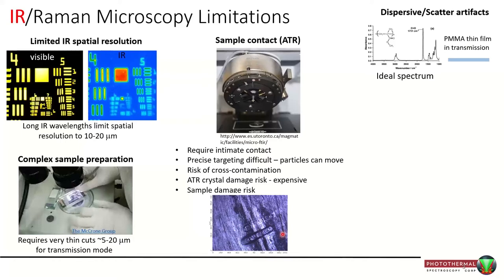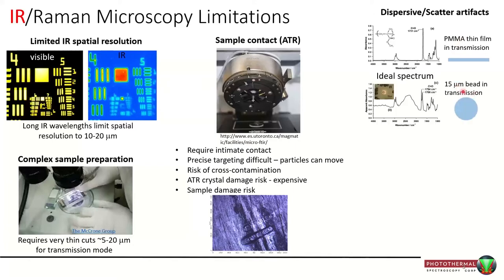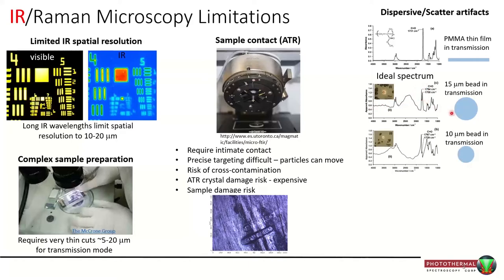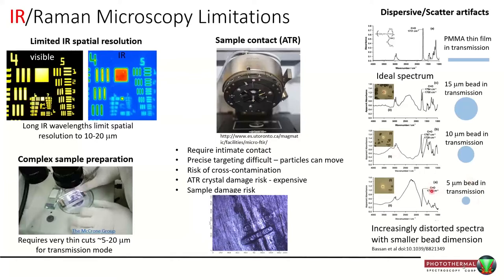Perhaps one of the biggest and lesser-understood issues are what we call dispersive scatter artifacts. Starting with an ideal thin film measurement in transmission mode, you get a nice flat baseline and symmetric peaks — this is the spectrum of polymethyl methacrylate. But if you take the exact same material as a sphere and measure it in transmission mode, the spectrum looks very different: offset baseline, split and shifted peaks. This effect is size-dependent, making identification difficult because spectra are now dependent on sample shape, size, and surface roughness.